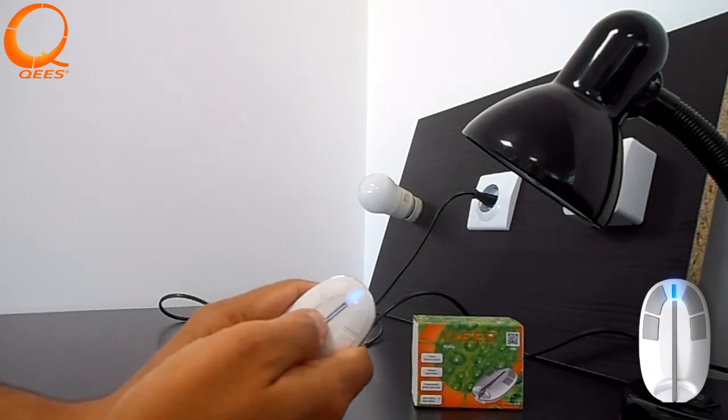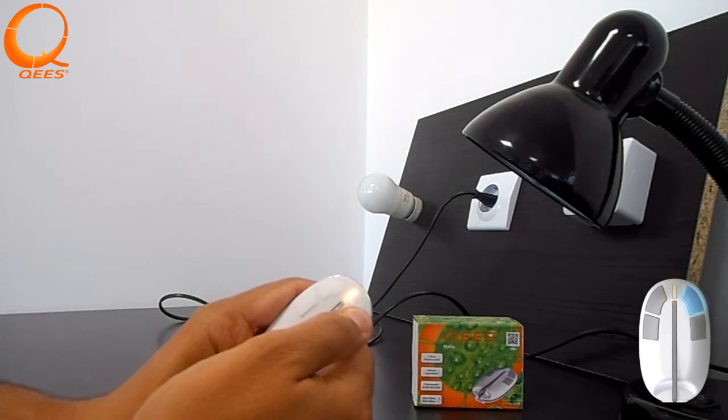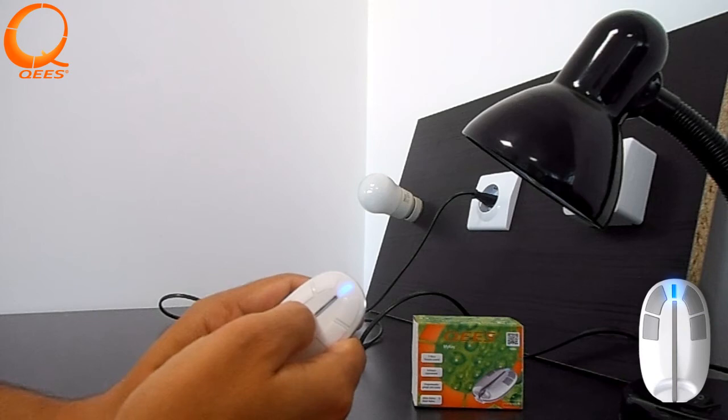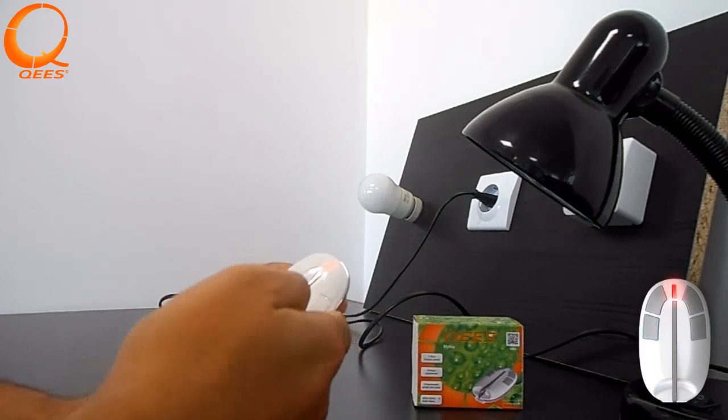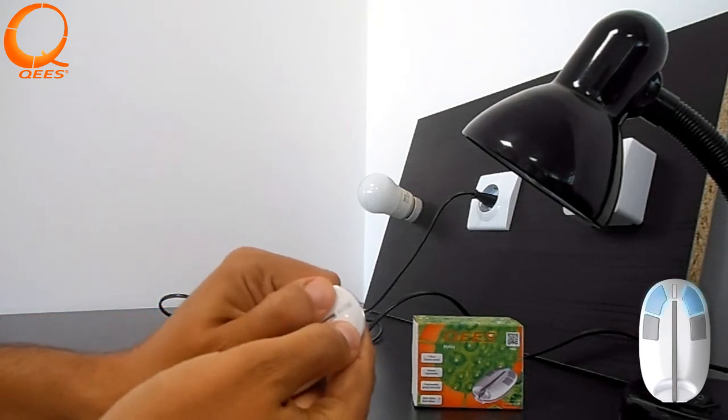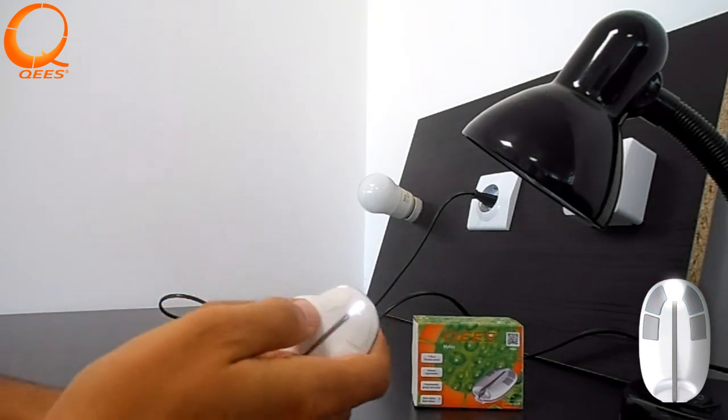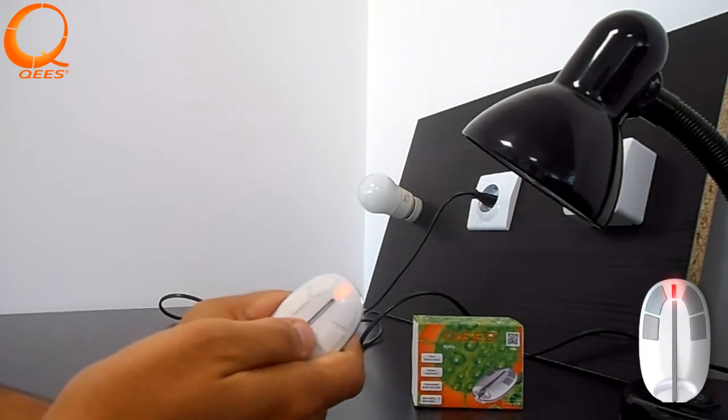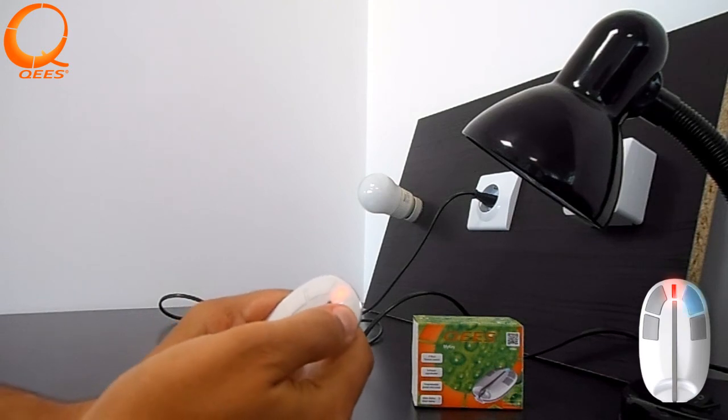And now we toggle for the yellow option and select with a long press on button 2. Whenever you want to return to the main menu, cycle to the red option and select it with a long press on button 2.